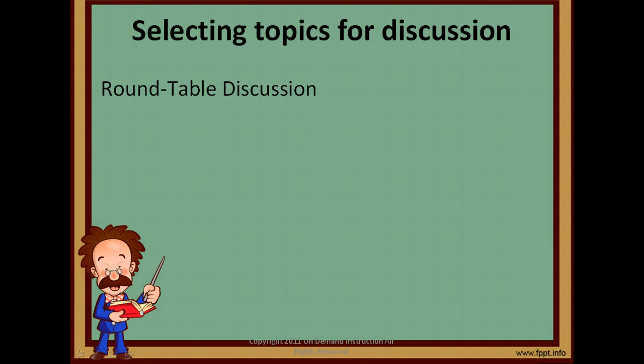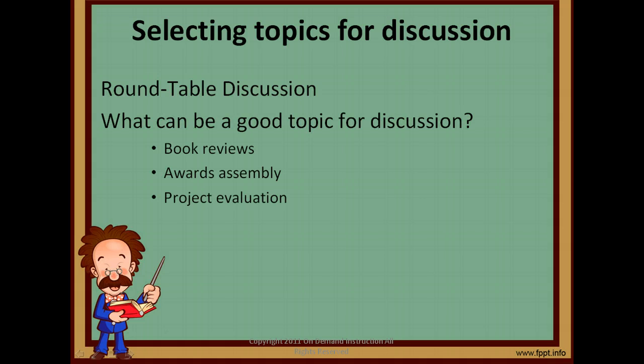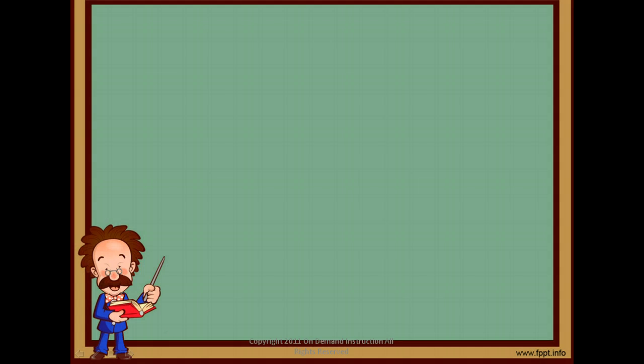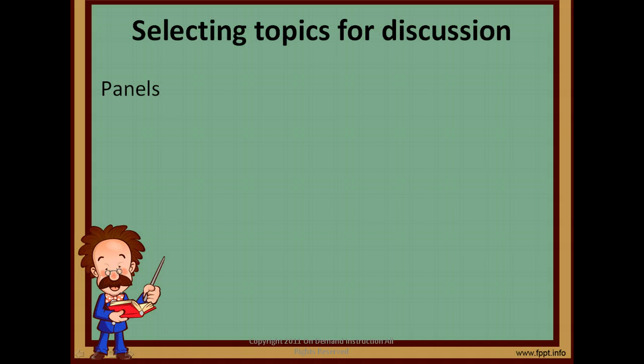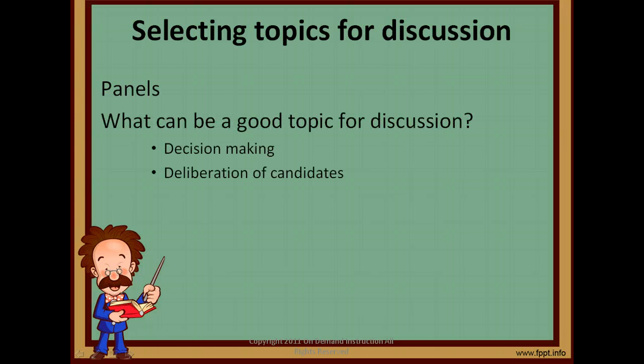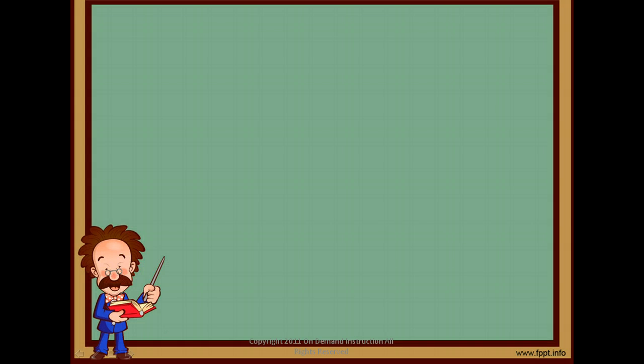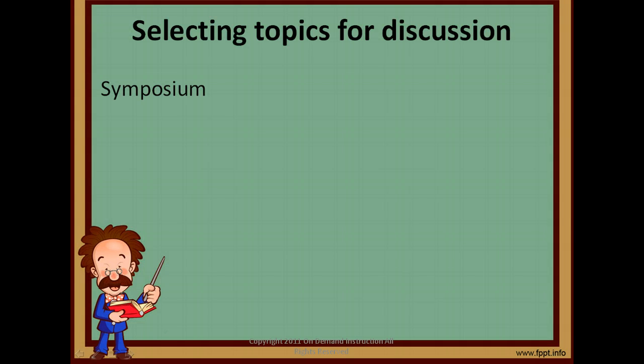For round-table discussions, you can talk about books you have read, assemblies, and even a project evaluation. An example of topics that your group can tackle on panels are deliberations and discussions making issues and concerns. Symposiums can be about career talks or science exhibitions held in school.